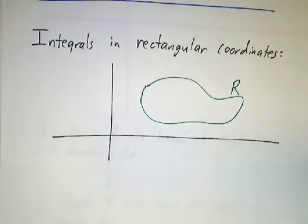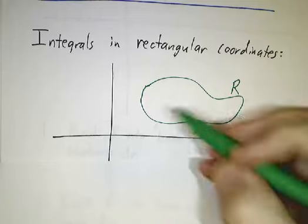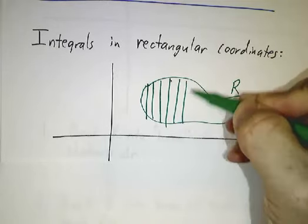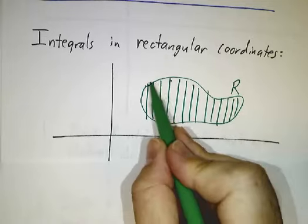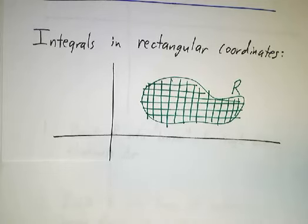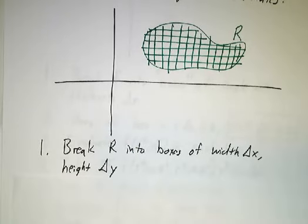The idea is if you want to integrate a function f over a region R, the first thing you do is you chop the region R into little pieces. We usually do that by chopping our x-interval up into little pieces, all of width delta x, and our y-interval up into pieces, all of width delta y. So now we've got a whole bunch of boxes, each of width delta x and delta y.